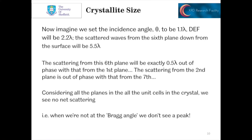That means the scattering from that sixth plane will be exactly half a wavelength out of phase with that from the first plane. The scattering from the second plane will be out of phase with that from the seventh and so on. So if you consider all the planes in all the unit cells in the crystal, we wouldn't see any net scattering. What that means is when we're not at the Bragg angle, we don't see a peak. So basically we've defined the opposite of the Bragg condition.